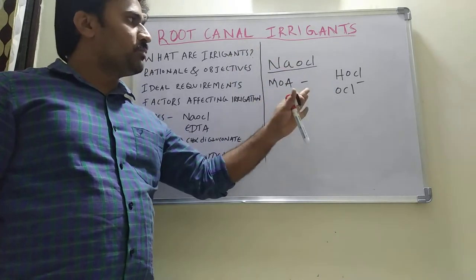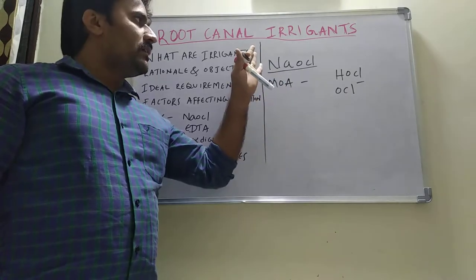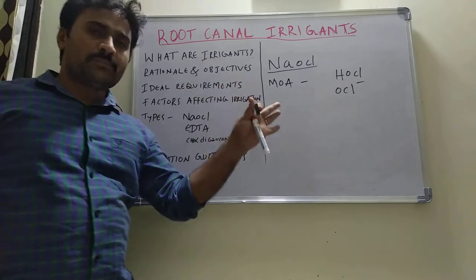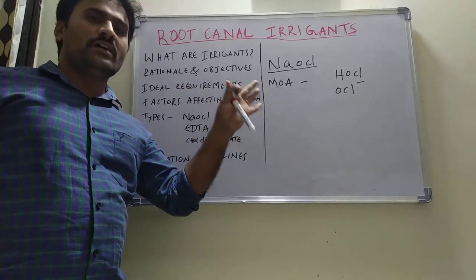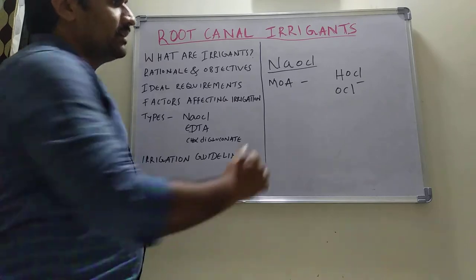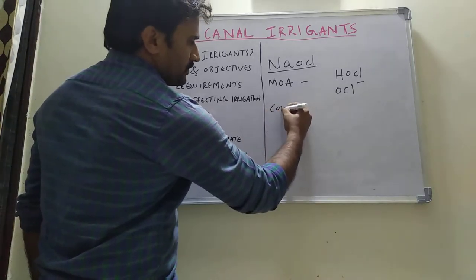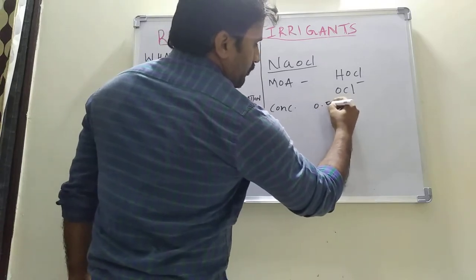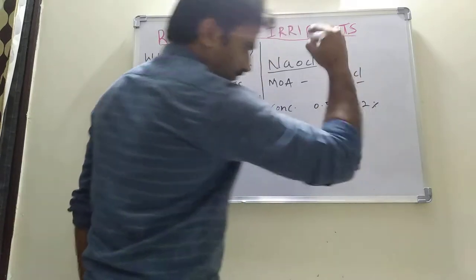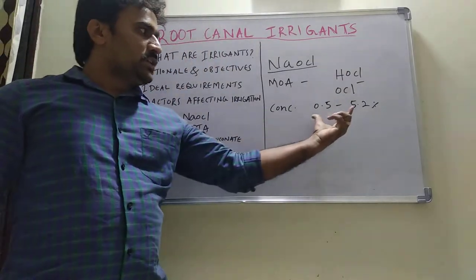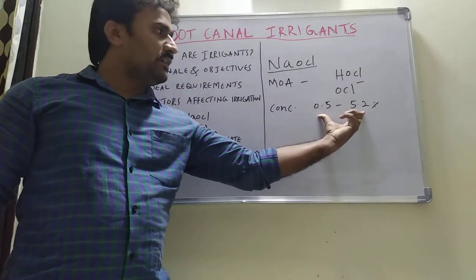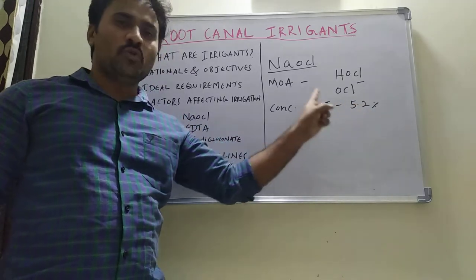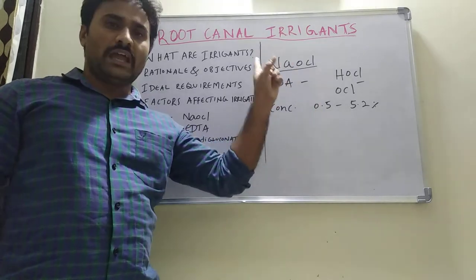Hypochlorous acid and hypochlorite ion are the two ions responsible for the antimicrobial property of sodium hypochlorite — they disrupt the DNA synthesis of microorganisms. The concentration used ranges from 0.5% to 5.2%, but 5.2% is the most commonly used concentration of sodium hypochlorite.